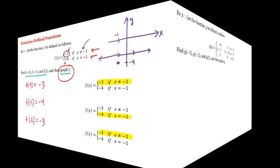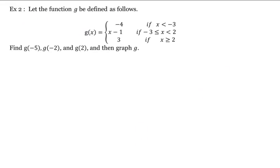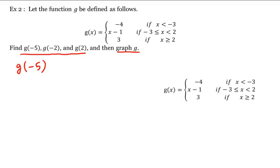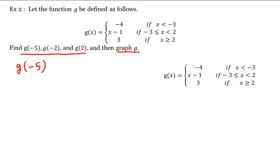Let's look at another example. Let g be defined by this piecewise function. We're going to find g of negative 5, g of negative 2, and g of 2, and then we'll graph it. Let's start with computing g of negative 5. Now which of these three intervals does negative 5 lie in? It lies in this first interval, because negative 5 is less than negative 3. Therefore, we're going to use the first rule, or the first piece, to compute this. So g of negative 5 is equal to negative 4.